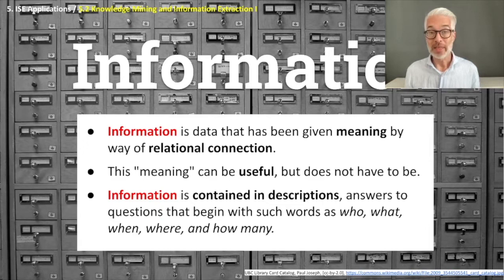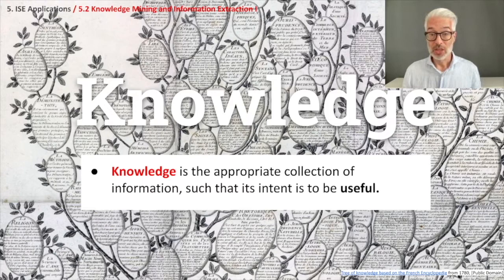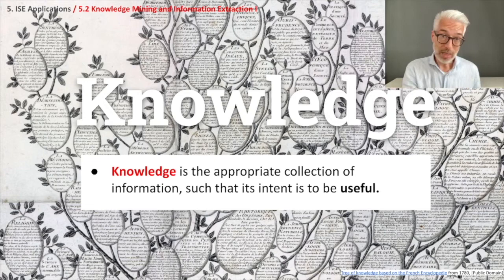However, we want to know more — we want to see patterns, how things really interact, what is useful. So we have to come up with knowledge. In this context, knowledge can be defined as an appropriate collection of information such that its intent is to be useful. This is another kind of knowledge definition — you remember from the first part of the lecture we also have different kinds of definitions — but this is in terms of knowledge extraction, showing how we go from data to knowledge with information in between.